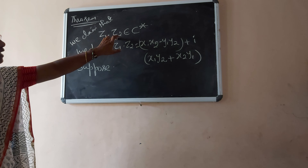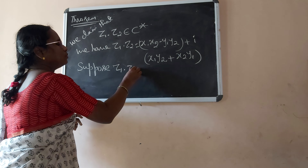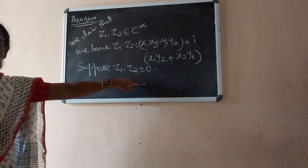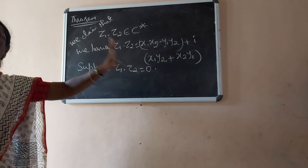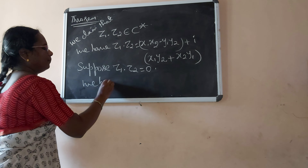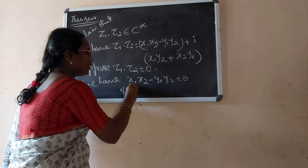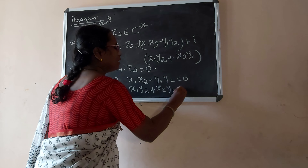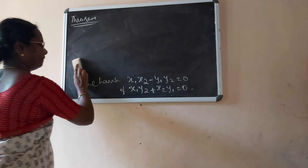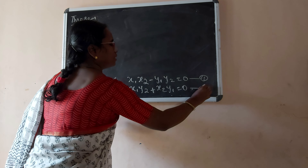Now let us prove Z1 into Z2 belongs to C star. We have Z1 into Z2 is equal to X1 X2 minus Y1 Y2 plus i into X1 Y2 plus X2 Y1. We claim that Z1 into Z2 belongs to C star, but we have to prove this. We can use the contradiction method.